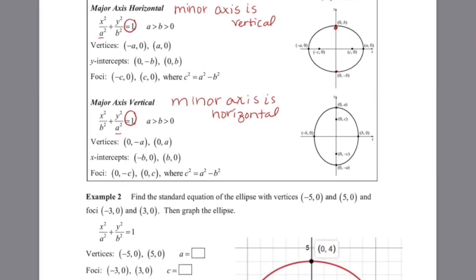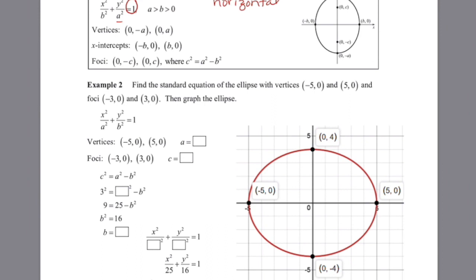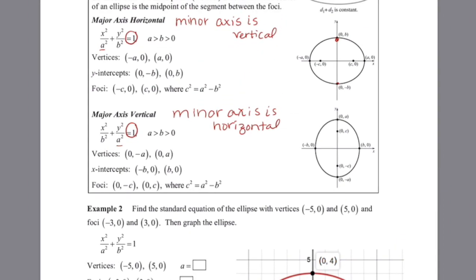It's asking us to find the standard equation of an ellipse with vertices at (−5, 0) and (5, 0). So if I'm given the vertices, notice I'm given the a value — the vertices give the x value, so therefore I already know that my a value has to be 5. We also know the foci. Notice that the foci give me the x value, which is my c value, so c is equal to 3.